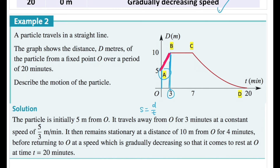It then remains stationary at a distance of 10 meters from O for four minutes — from t = 3 to t = 7 — matching segment bc. No gradient means no speed, so the particle is simply not moving. It then returns to O at a speed which is gradually decreasing, coming to rest at O at time t = 20 minutes, corresponding to the curved segment cd gradually decreasing until reaching point d.